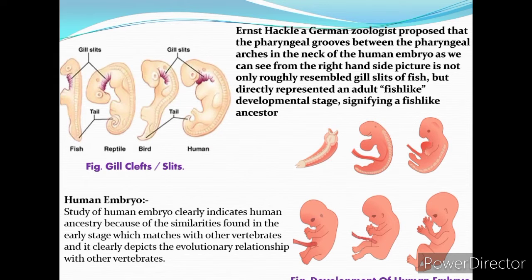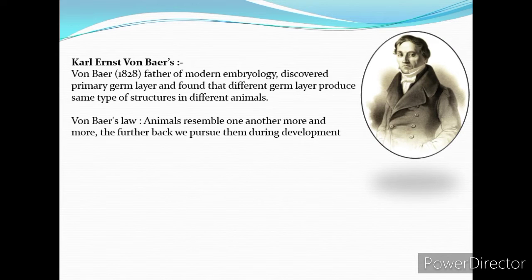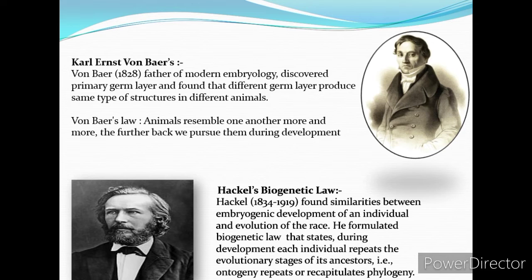The study of the human embryo clearly indicates human ancestry because of similarities found in the early stage which match with other vertebrates, depicting the evolutionary relationship. Von Baer, the father of modern embryology, discovered the primary germ layers and found that different germ layers produce the same type of structure in different animals. According to Von Baer's law, animals resemble one another more and more the farther back we trace their development. Haeckel's biogenetic law states that during development each individual repeats the evolutionary stages of its ancestors — that is, ontogeny recapitulates phylogeny.